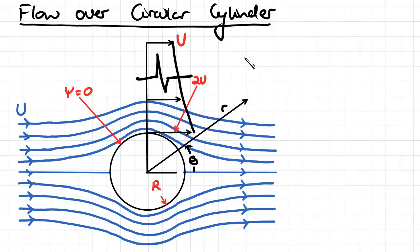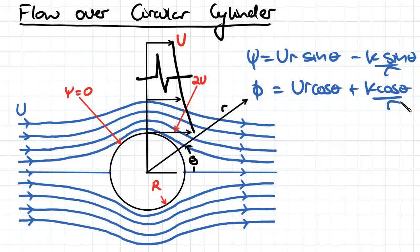So for our stream function, it's just going to be equal to ur sine theta minus k sine theta over r. And for our velocity potential, it's just going to be equal to ur cos theta plus k cos theta over r.